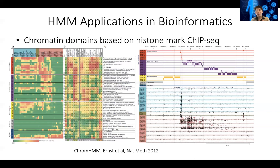Some regions could be promoters, some could be exons. It is similar to gene prediction or genome annotation — this region is an enhancer, this region is a suppressor, that region is a repeat region, that region is an exon, that region is a promoter, and so on. But instead of using genomic DNA sequence as the input data, it's using all the histone mark data across the genome.